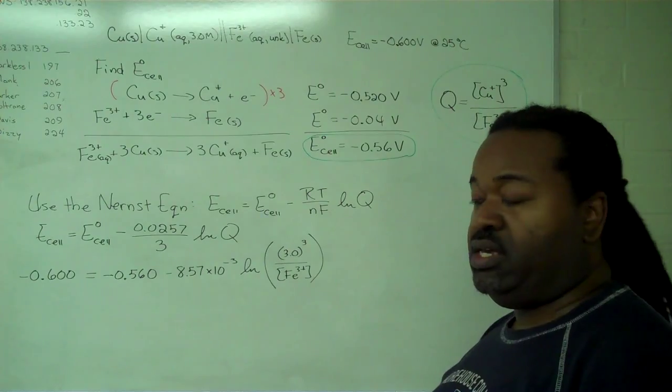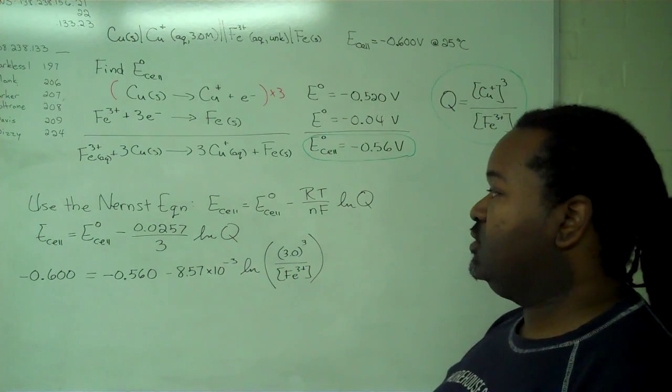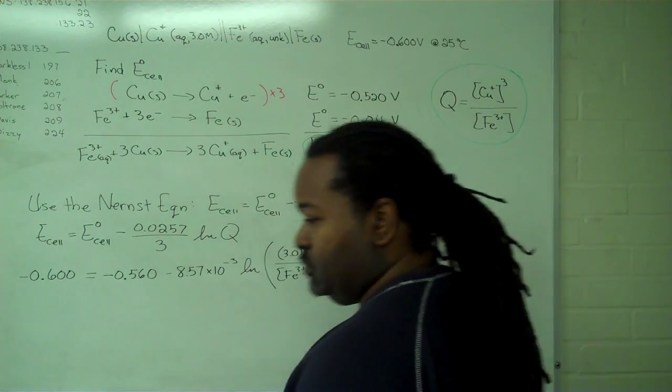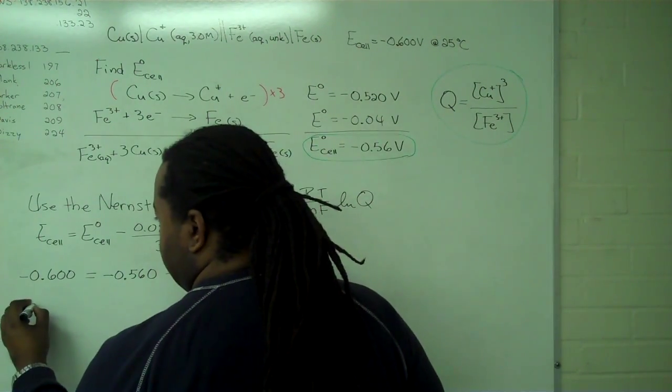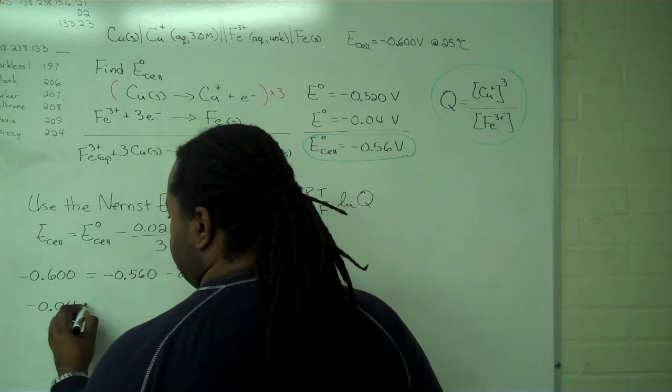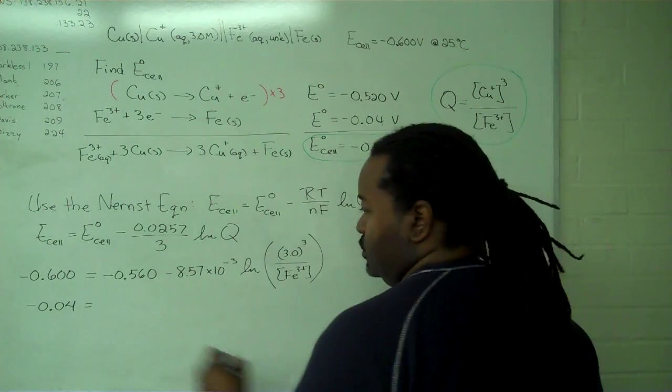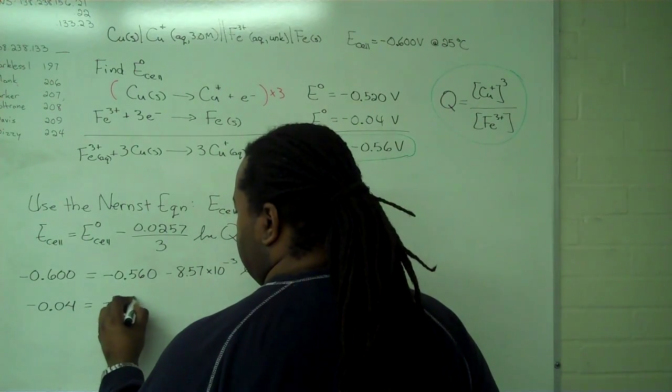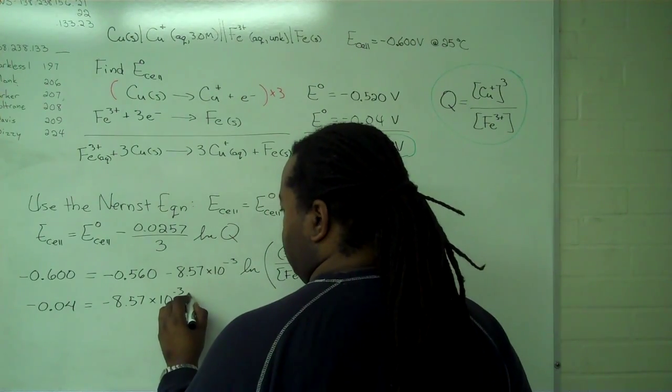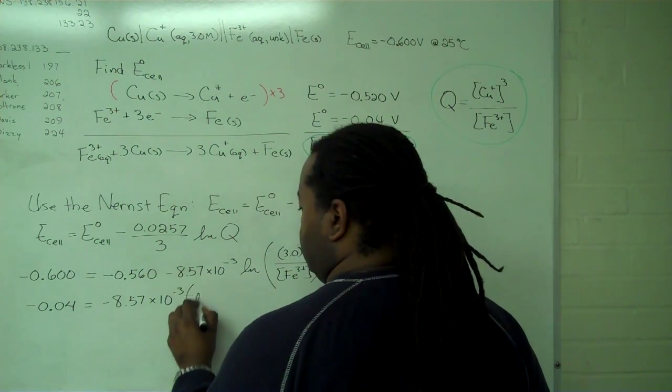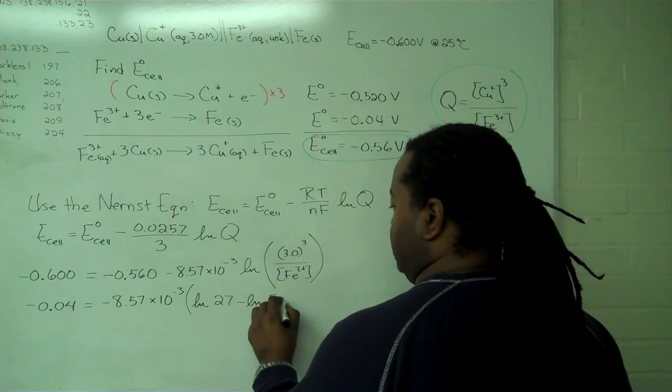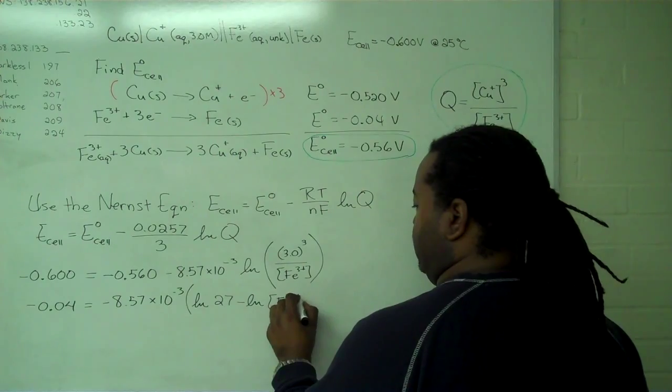And so now we can proceed to simplify things. We're going to need to add 0.56 to both sides. This will leave us with negative 0.04 equals minus 8.57 times 10 to the minus 3. And we can use logarithm rules. This is ln of 27 minus ln of our unknown concentration.